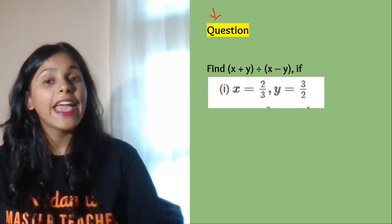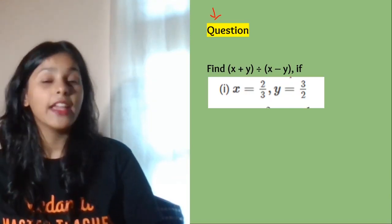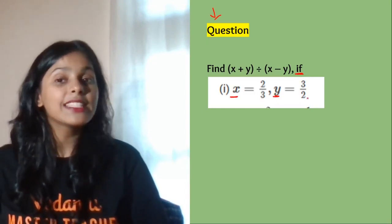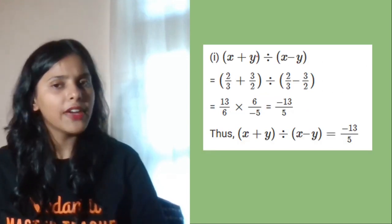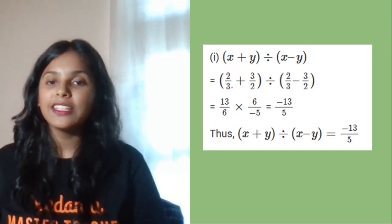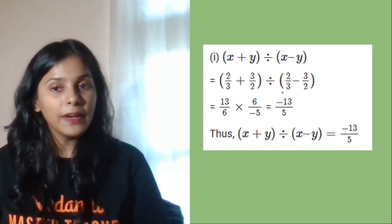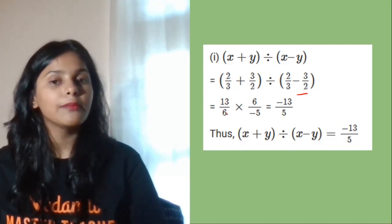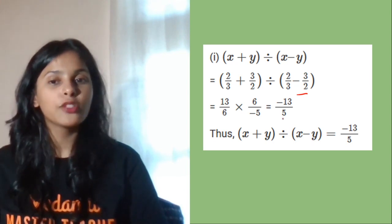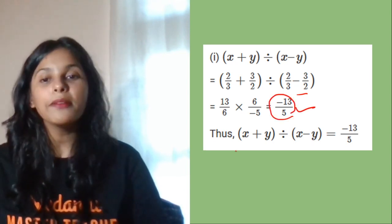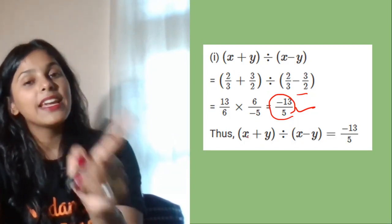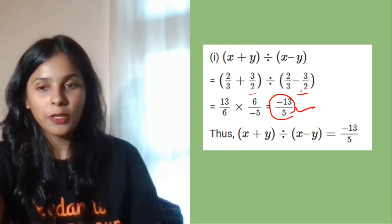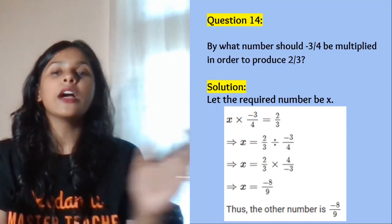This question: find the value of (x + y) divided by (x − y), given x = 2 by 3 and y = 3 by 2. Substitute the values: (2/3 + 3/2) divided by (2/3 − 3/2). Taking LCM gives 13 by 6 in the numerator and minus 5 by 6 in the denominator. Dividing gives minus 13 by 5 as the final answer.